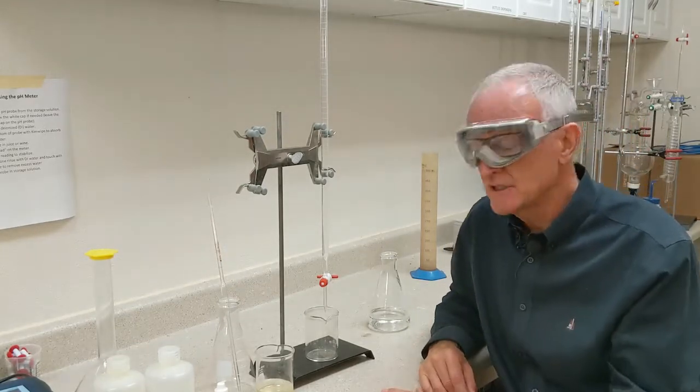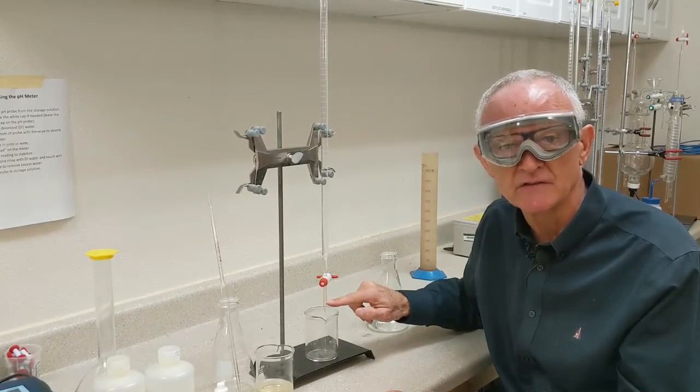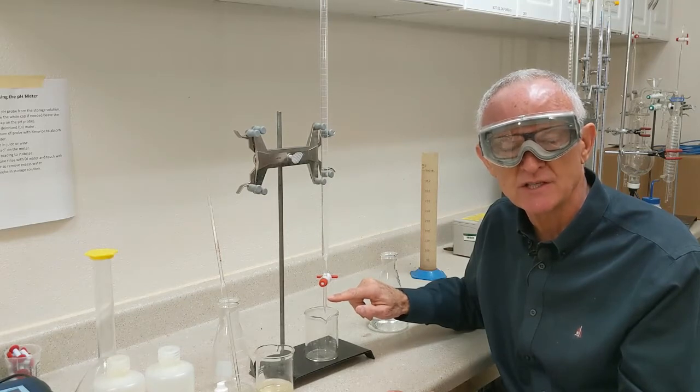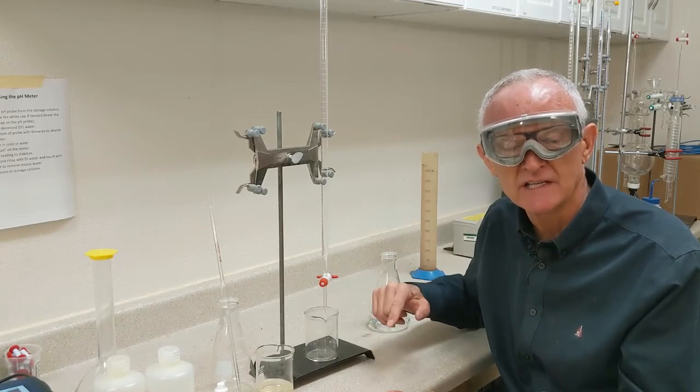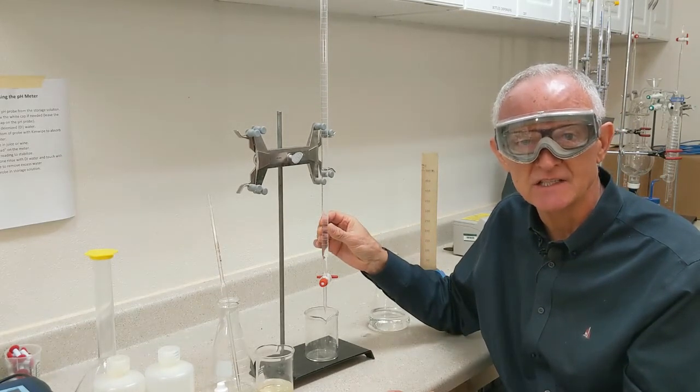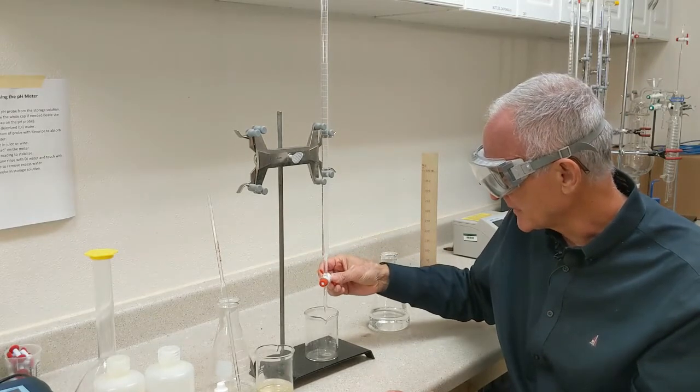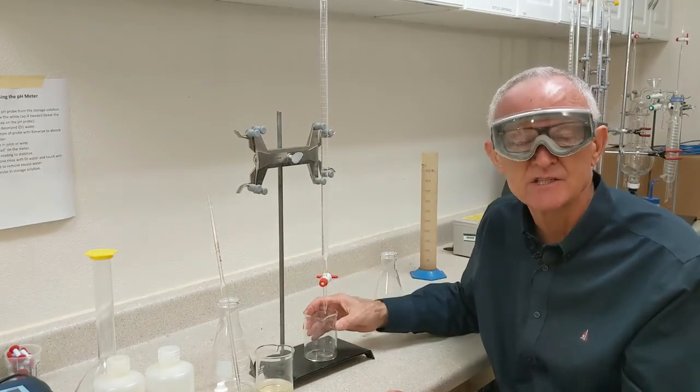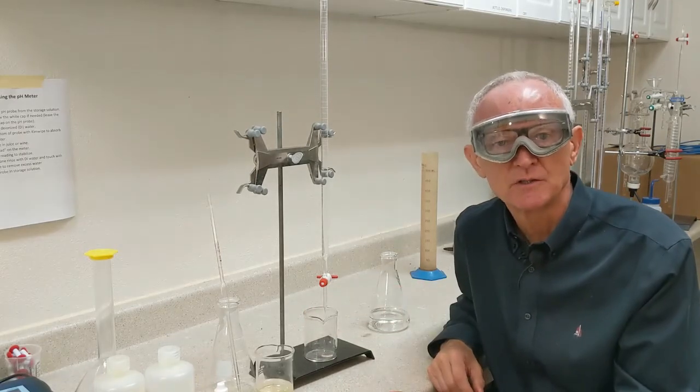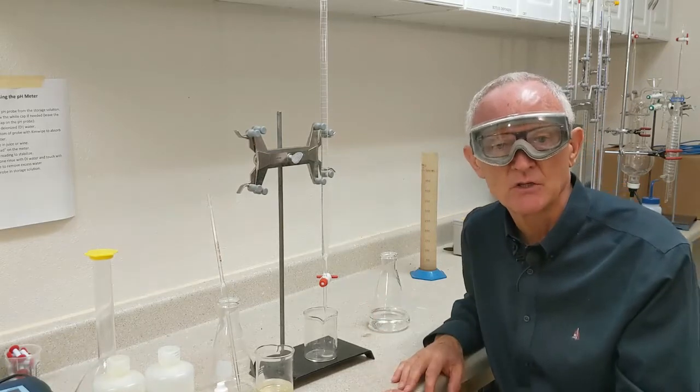The next thing I'm going to do is make sure that this little tip down here is full of sodium hydroxide. Because if we don't fill that before we do a titration, we will overestimate the amount of sodium hydroxide we needed to neutralize the acid in our wine. So I'm just going to drain a little bit of that into a waste beaker here. I'm going to check, make sure there are no air bubbles in that little tip. Nothing leaks, so I'm good to go.